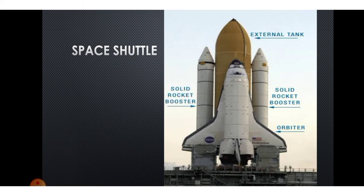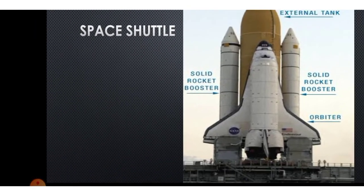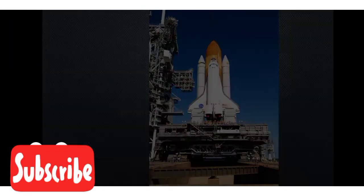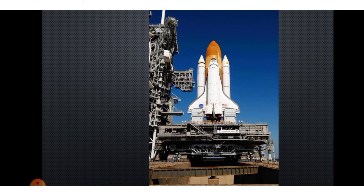Space shuttles are the vehicles used to launch satellites nowadays and to recover damaged satellites and return them to earth. A space shuttle has parts including external tanks, solid rocket boosters, and orbiter. It has many facilities which help the astronauts to live in space for many days. People who travel on a space shuttle include pilots, engineers who operate and repair instruments, scientists who carry out experiments, and astronomers who study the universe.